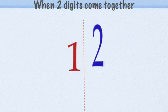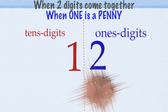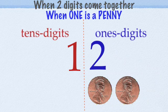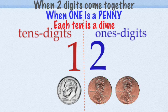When we bring two digits together, the right digit is the ones digit, sort of like pennies, so we have two pennies. And the left one is like a tens digit, sort of like dimes, so we have one dime.